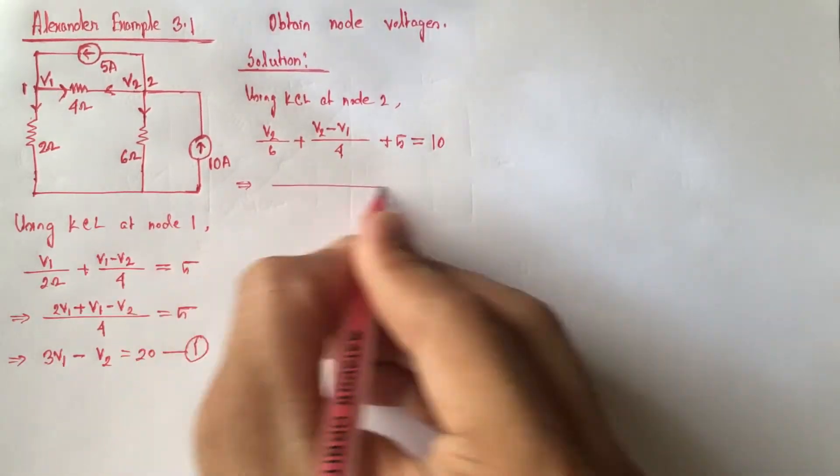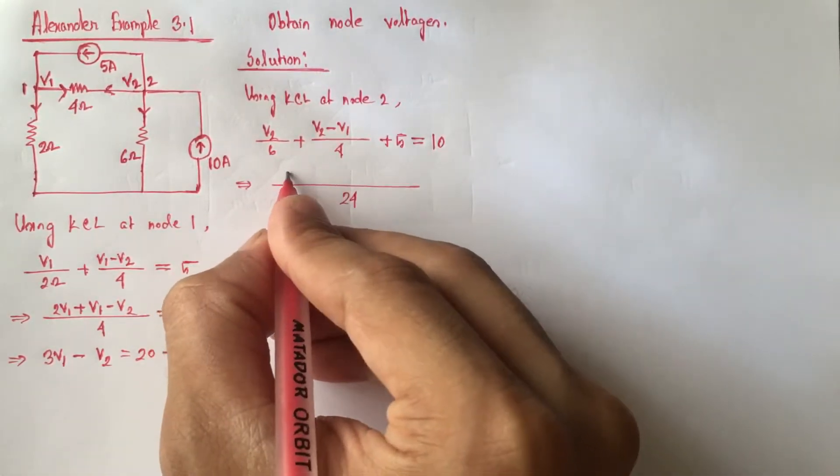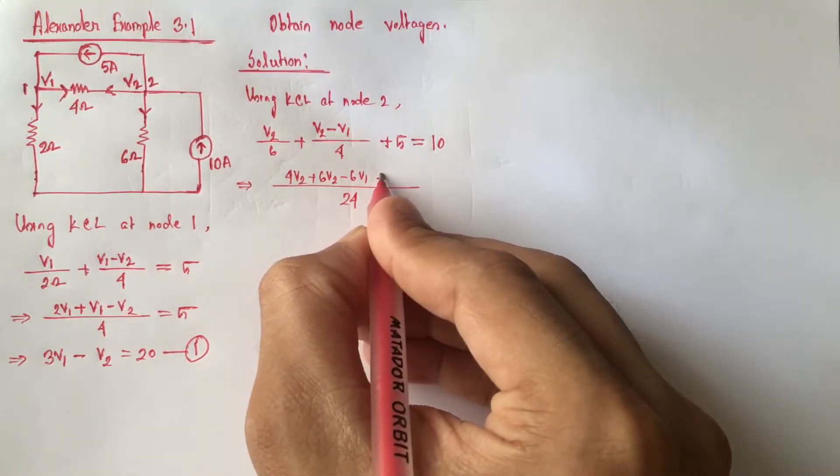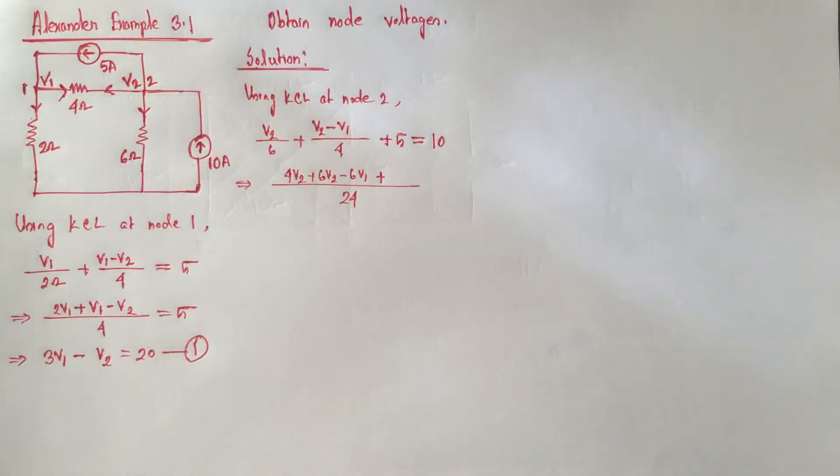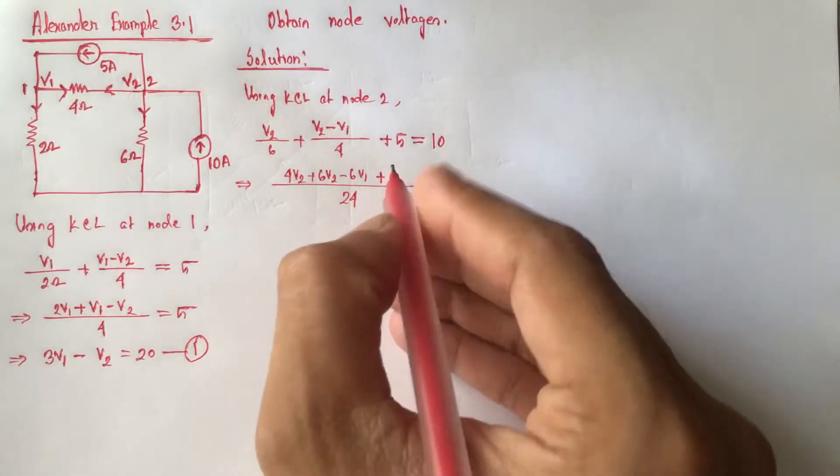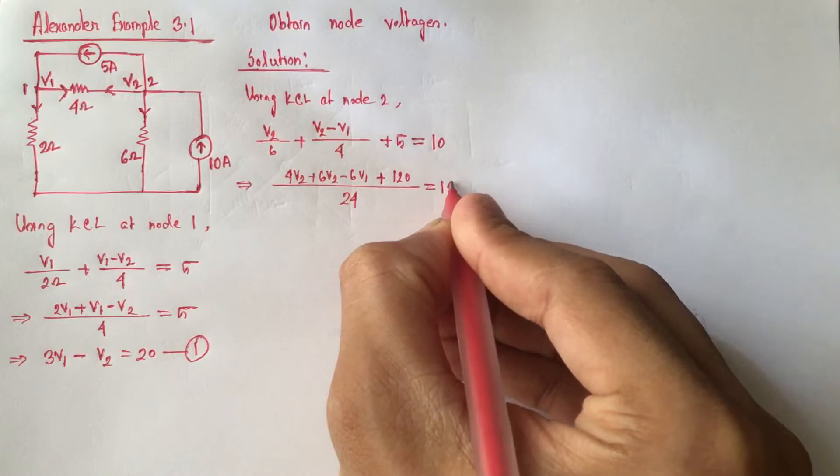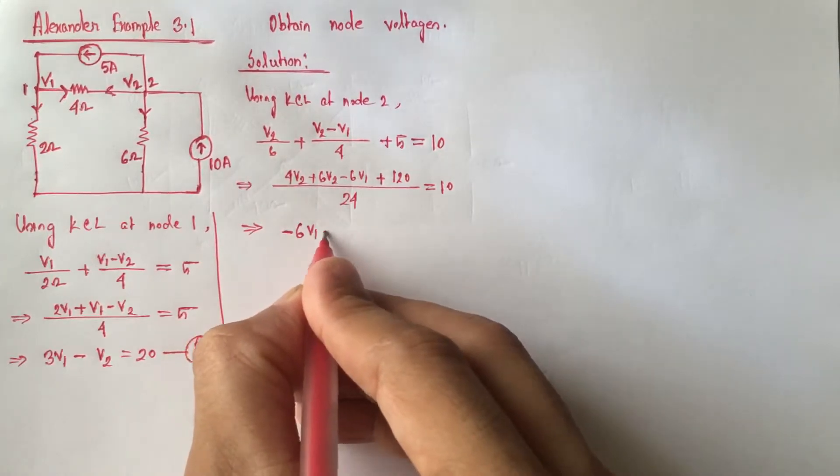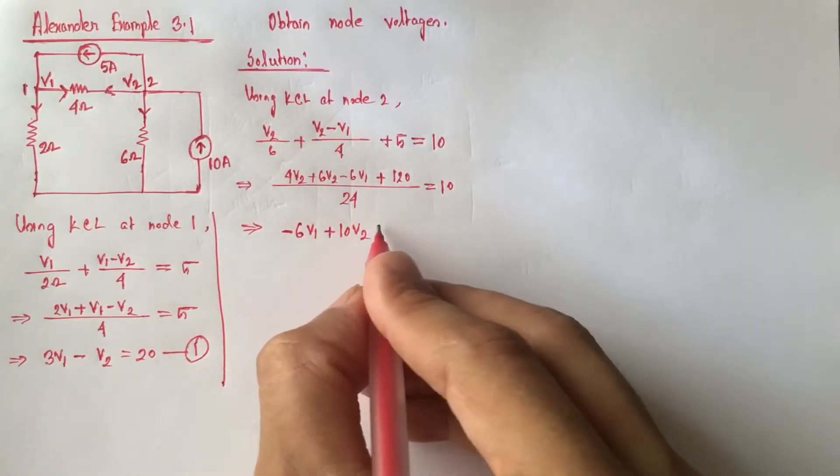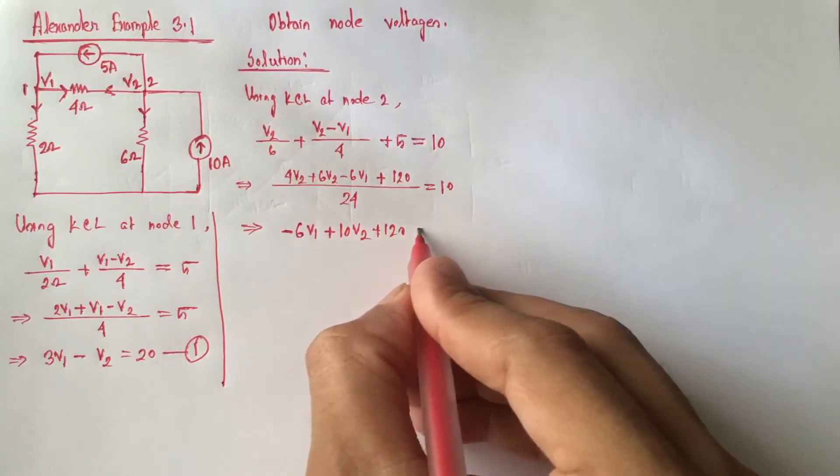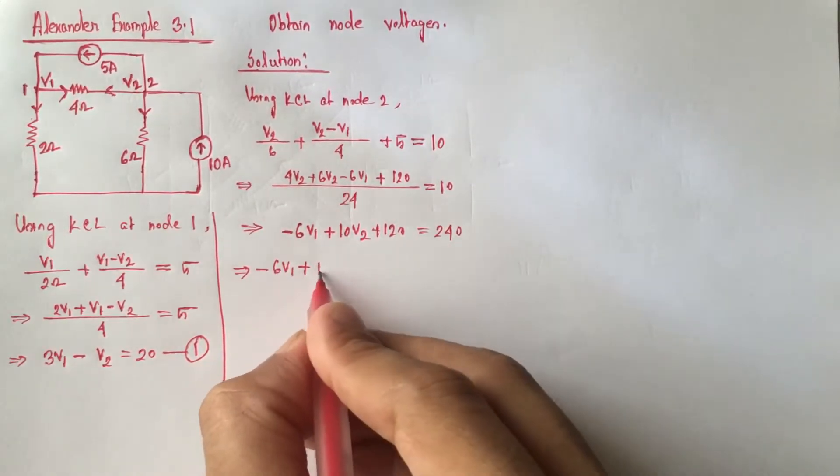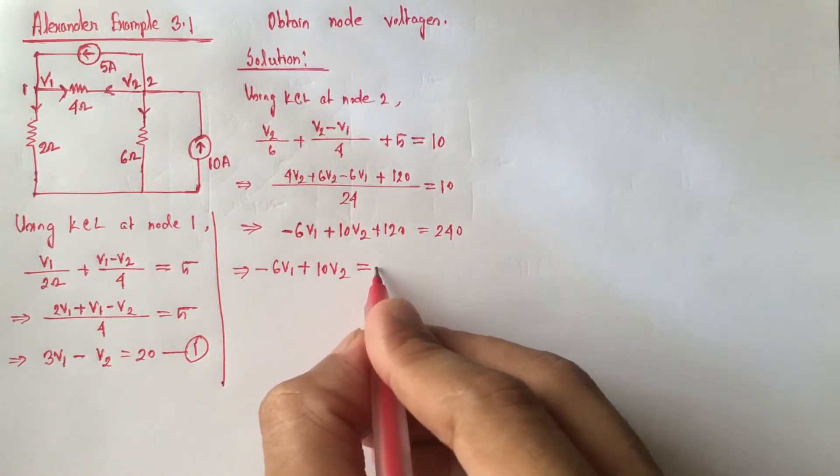Now simplifying the equation, 4 V2 plus 6 V2 minus 6 V1 plus 120 is equal to 240. Minus 6 V1 plus 10 V2 is equal to 120. This is equation 2.